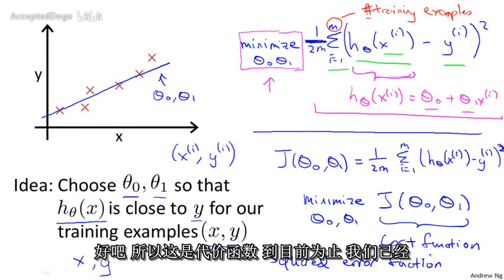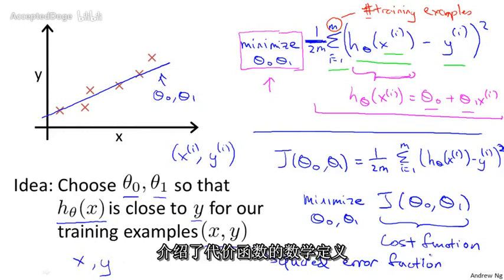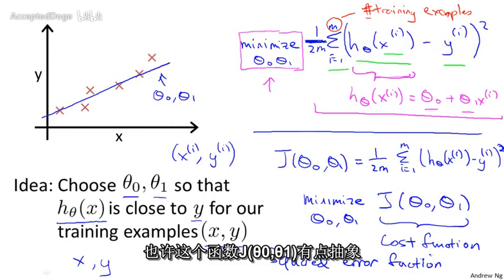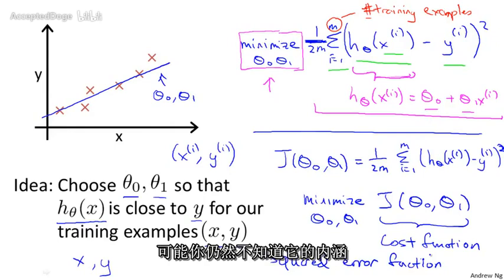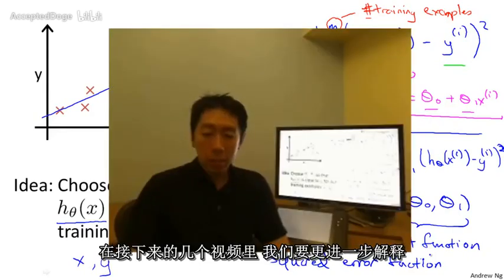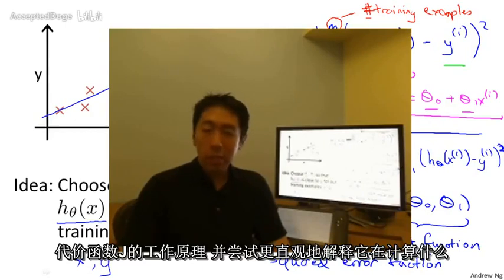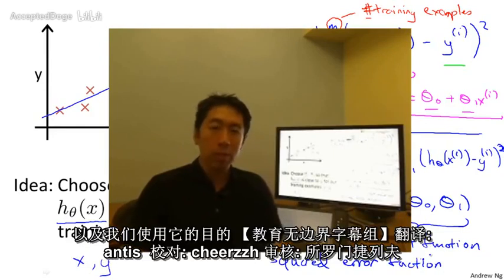Okay, so that's the cost function. So far, we've just seen a mathematical definition of this cost function. And in case this function J(θ₀, θ₁) seems a little bit abstract and you still don't have a good sense of what it's doing, in the next video, in the next couple of videos, I'm actually going to go a little bit deeper into what the cost function J is doing and try to give you better intuition about what is computing and why we want to use it.